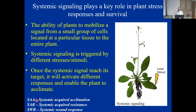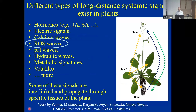I will mainly talk about systemic acquired acclimation, but there is also systemic acquired resistance and systemic wound response, which I will mention too. A lot of long-distance systemic signals are known: hormones, electric signals, calcium waves, ROS waves, pH waves, peptides, and more. A lot of work is summarized in this slide. These signals can move from a leaf to the shoot or the root, from the root to the whole shoot, and so forth.